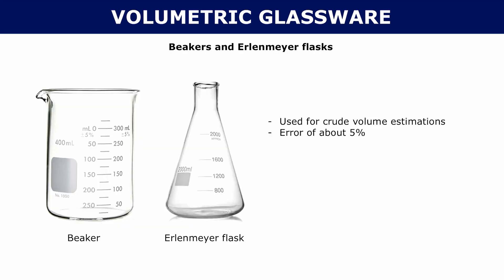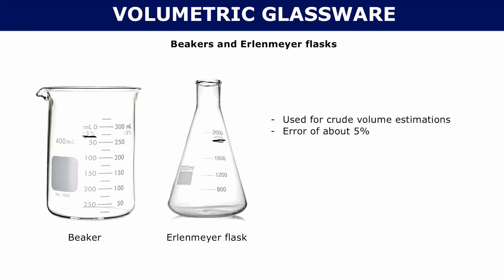Let's take a look at beakers and Erlenmeyer flasks. This is what they look like. The reason that they're not considered volumetric glassware is because they're only used for crude volume estimations. They have a pretty high error percentage, about 5%. You can see them on the side, they're marked. In the Erlenmeyer flasks, you have an approximation here. And in the beaker here, you have a plus or minus 5%. This error might seem kind of small, but in the world of chemistry, you want to be really precise.